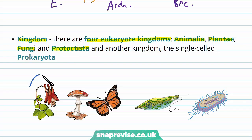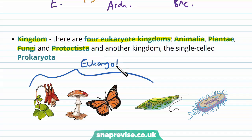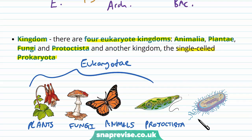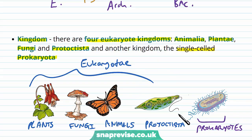Under the heading of eukaryotes, we have Plants, Fungi, Animalia (or Animals), and Protoctistae. There is also another kingdom called the single-celled Prokaryota, which covers prokaryotes. Essentially, once we've chosen the domain, we choose the kingdom, and then the next level, and the next — this is the hierarchical system that scientists designed.